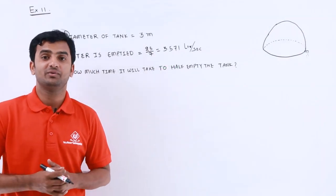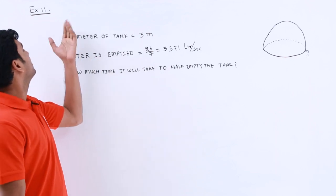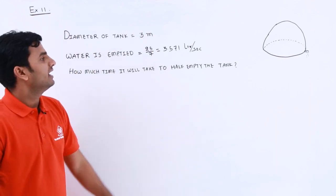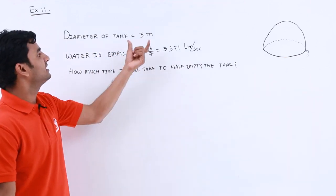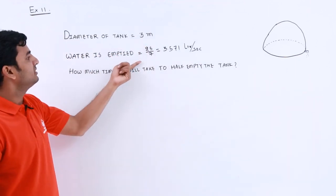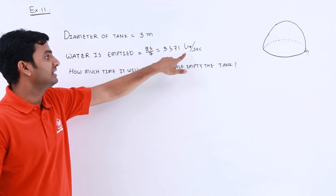Hello guys, in this video we are going to discuss example number 11. Here a hemispherical tank is given which is filled with water, which has a diameter of 3 meters, and water is emptied at 3.571 liters per second.